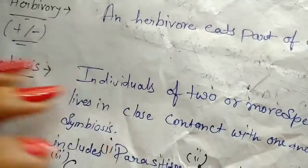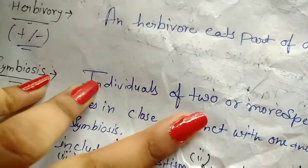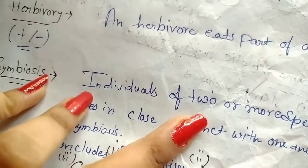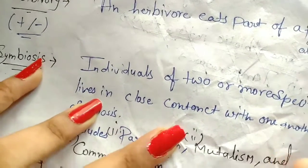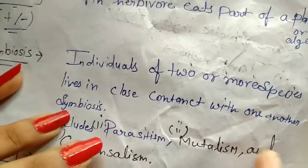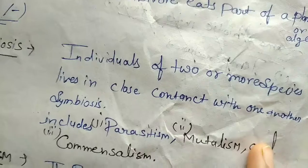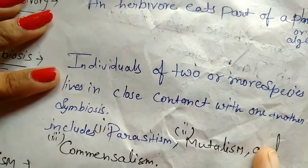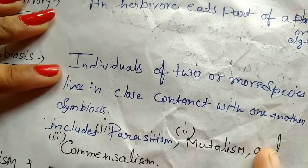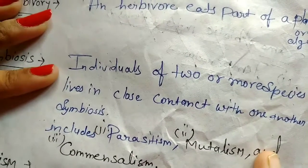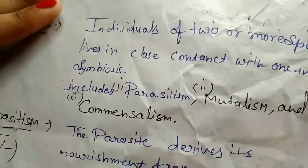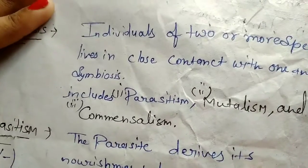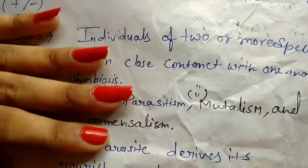Symbiosis involves two or more species that live in close contact with one another. There are two species that stay together. There are four types of symbiotic interactions.